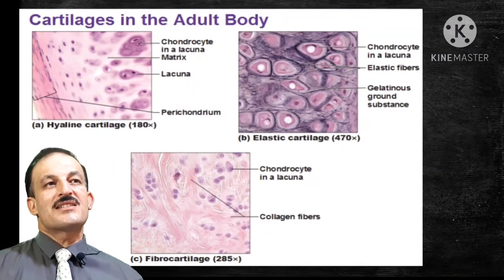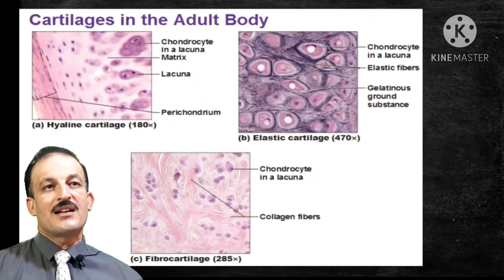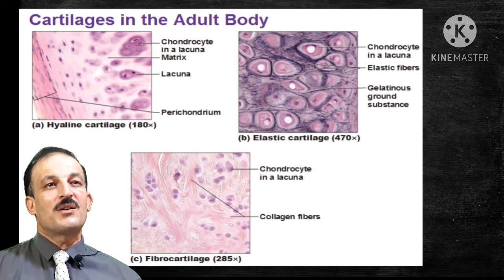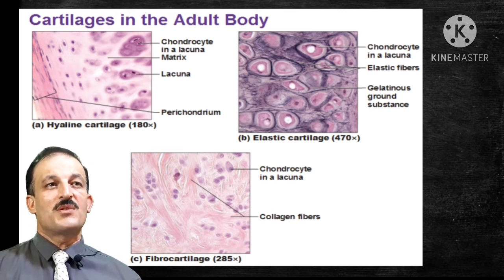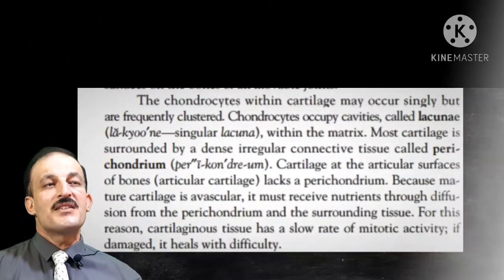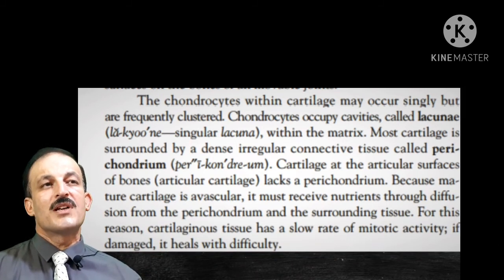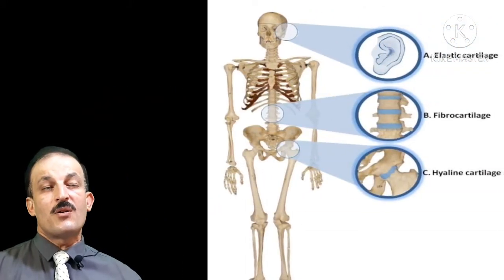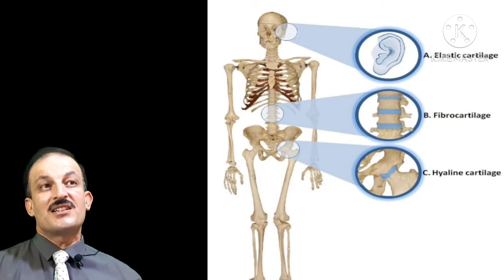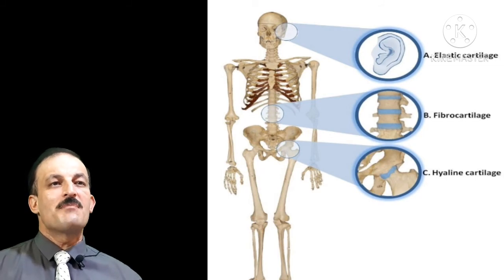Other histological classification figures show hyaline cartilage with its homogenous intercellular matrix, elastic cartilage with its elastic fibers, and fibrocartilage with chondrocytes in lacunae and collagen fibers. The location of the three types: elastic cartilage is present in the ear, fibrous cartilage wherever strength is needed, and hyaline cartilage wherever there is both strength and active movement.